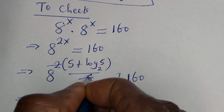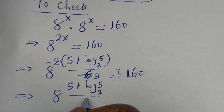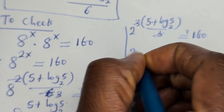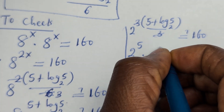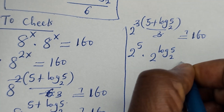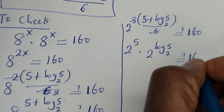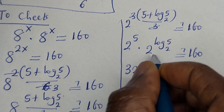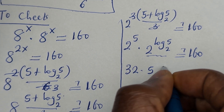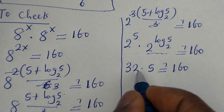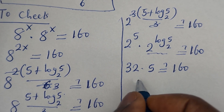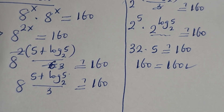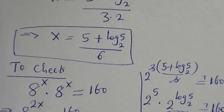Here we get 8 raised to the power (5 plus log 5 base 2) divided by 3, which equals 2 raised to the power 5 multiplied by 2 raised to power log 5 base 2, which must equal 160. Two raised to power 5 is 32, and 2 raised to log 5 base 2 is 5, so 32 times 5 equals 160, which is true. I hope you enjoyed the video — thank you for watching, please don't forget to like, share, comment, and subscribe to my channel.